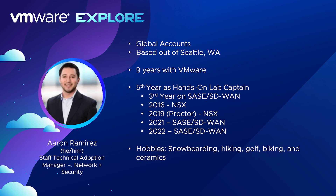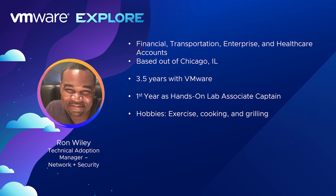My name is Aaron Ramirez. I'm out of Seattle, Washington. I cover VMware's global accounts. I've been with VMware nine years now. It's my fifth year working in HL. I started with the NSX labs and have been working on the SD-WAN and SASE labs for the last three years. Some of my hobbies include being outdoors, hiking, snowboarding, all that fun stuff.